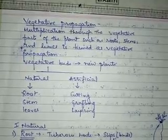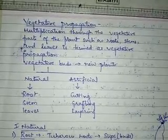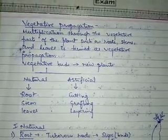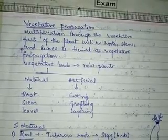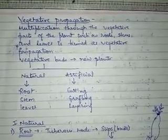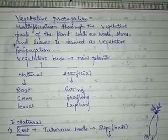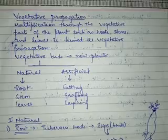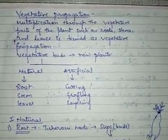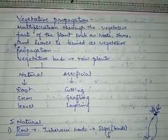Under asexual mode of reproduction in plants, we have studied that plants reproduce asexually by spore formation, by fragmentation, and by vegetative propagation. We have already discussed spore formation and fragmentation. Now we will start with vegetative propagation.